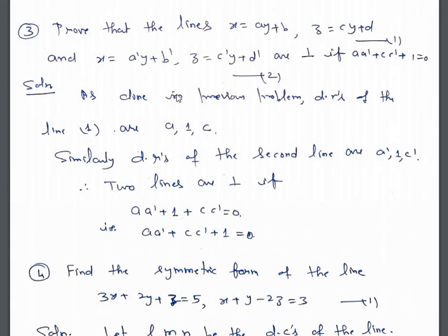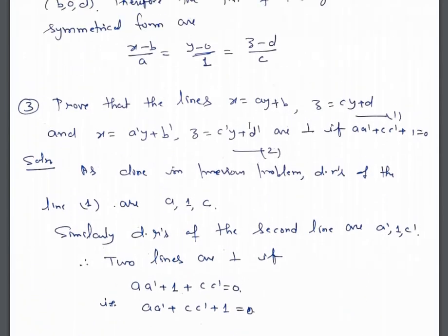Third example: prove that the lines x equals ay plus b, z equals cy plus d and x equals a'y plus b', z equals c'y plus d' are perpendicular if aa' plus cc' plus 1 equals 0. From the previous problem, direction ratios of the first line are a, 1, c and of the second are a', 1, c'. Two lines are perpendicular if aa' plus 1 times 1 plus c times c' equals 0, that is aa' plus cc' plus 1 equals 0.